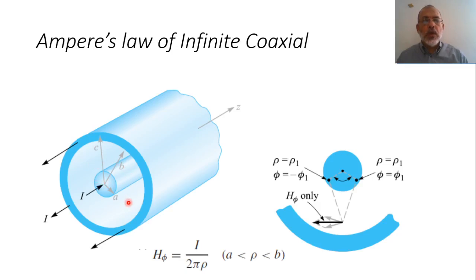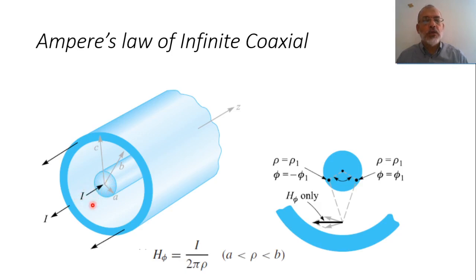Assume that we are going to find the magnetic field in the region between the inner and the outer conductors, at a radius ρ greater than A and less than B. If we have a closed circular Amperian loop — analogous to a Gaussian surface — then because of the symmetry of the problem, H_phi multiplied by 2πρ equals the current inside. The current inside here would be the total current I. So, the magnetic field at any ρ, where A < ρ < B, would be I over 2πρ.